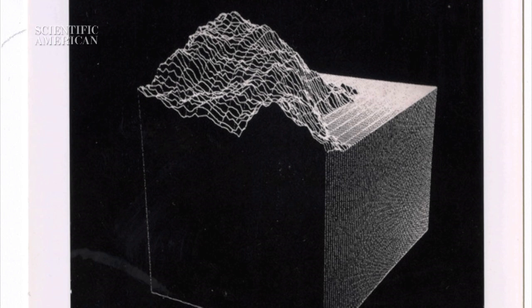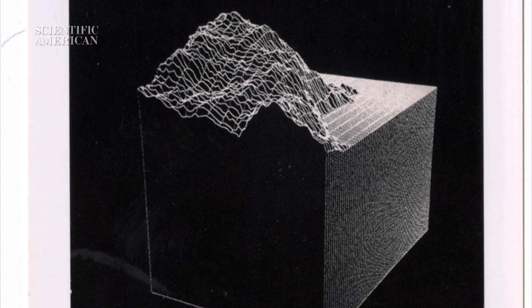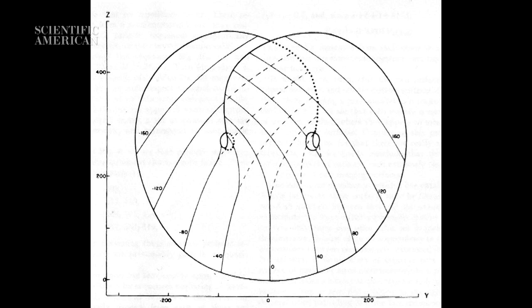Visual representation of math can be more than just beautiful or illustrative. Here is a chaotic system known as the Lorenz Attractor. It was first published by Edward Lorenz, a mathematician, meteorologist, and pioneer of chaos theory.